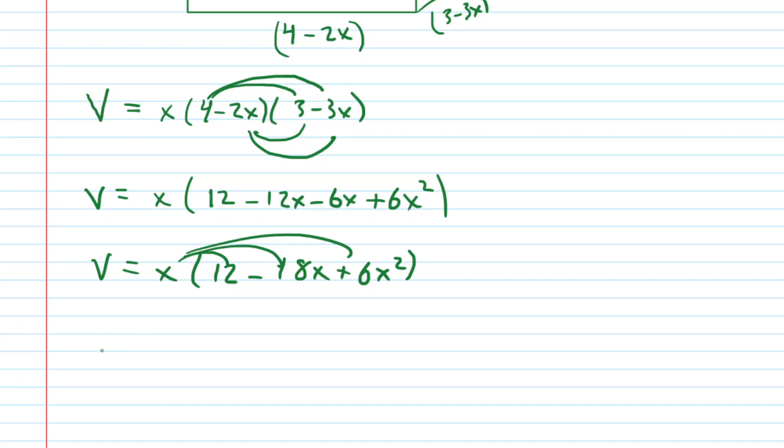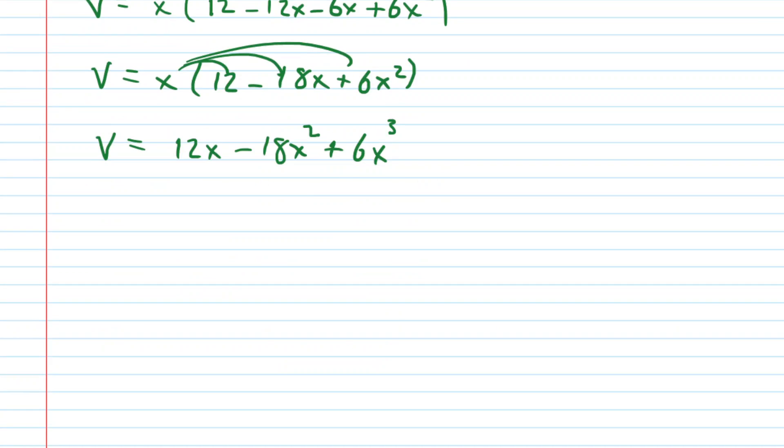We have 12 minus 18x, and then we're going to go ahead and distribute this x here. And when we do that we get our simplified volume equation. It's equal to 12x minus 18x squared plus 6x to the power of 3. Now to maximize a quantity we need the equation in terms of a single variable, which is exactly what we have, but then we also need the derivative.